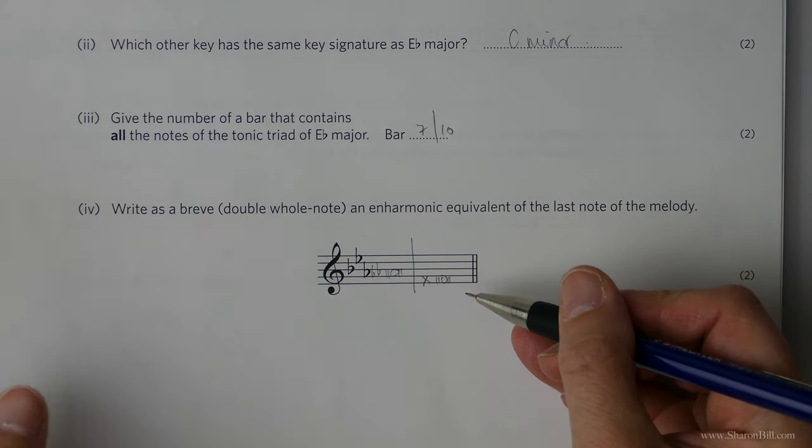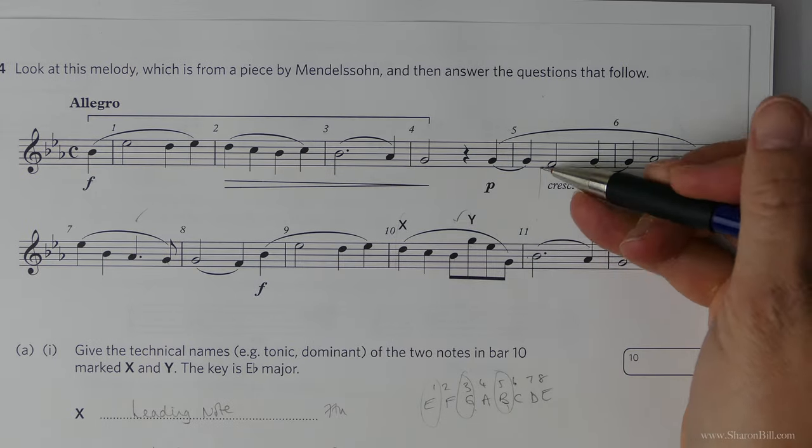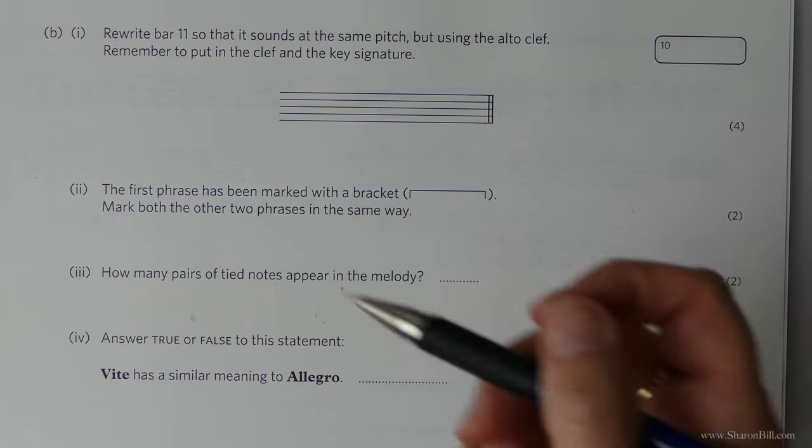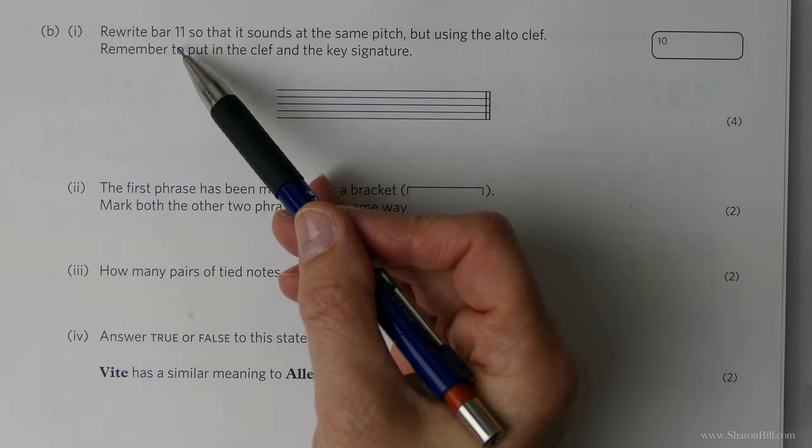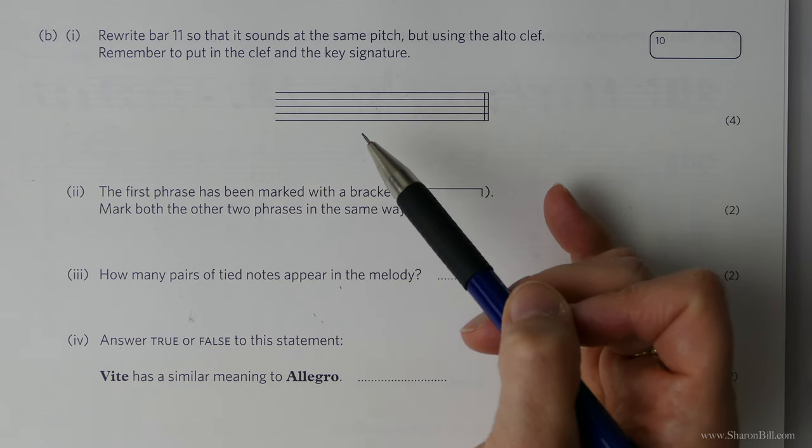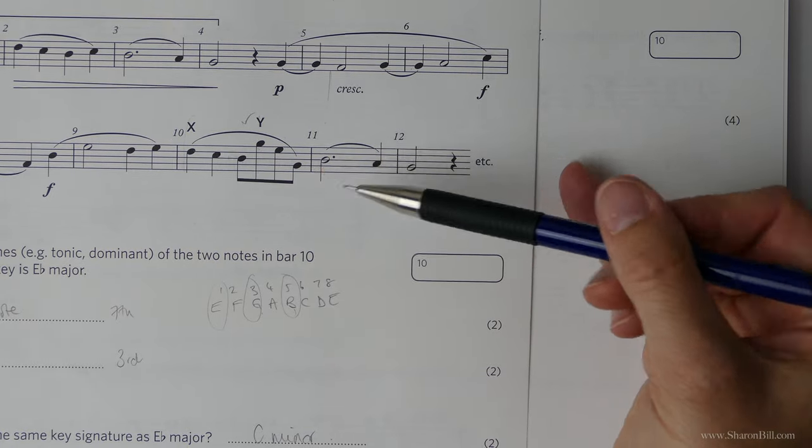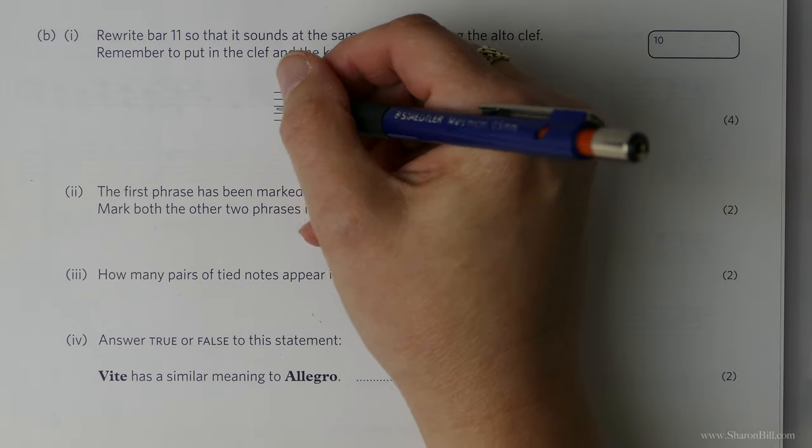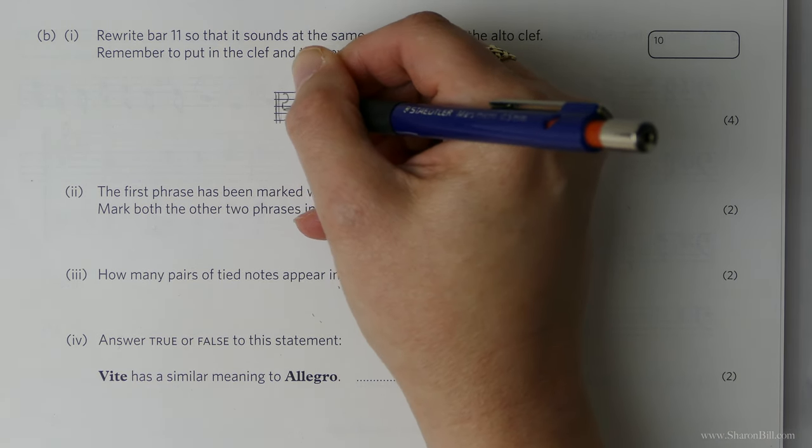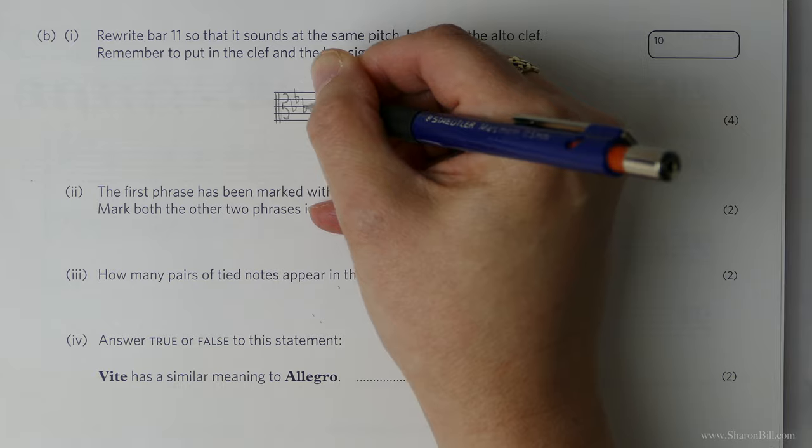That's that question completed. Now let's move on to the next part of that question. We're still referring to this little extract here. We're asked to rewrite bar eleven so that it sounds at the same pitch but we need to use alto clef. Let's have a look at bar eleven. We're going to be copying this bar out again and we need to put in the alto clef and the key signature. So alto clef centered around this middle line which is middle C. We want B flats, E flats and A flats.